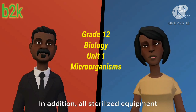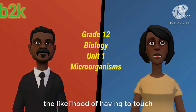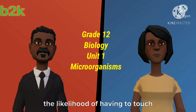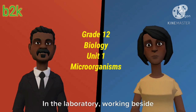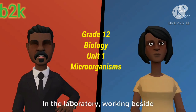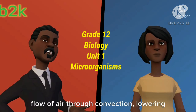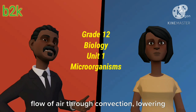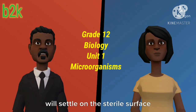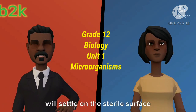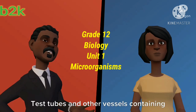All sterilized equipment should be easy to reach to prevent the likelihood of having to touch or lean on the surface. In the laboratory, working beside a Bunsen burner creates an upward flow of air through convection, lowering the risk that dust or other contaminants will settle on the sterile surface or equipment.